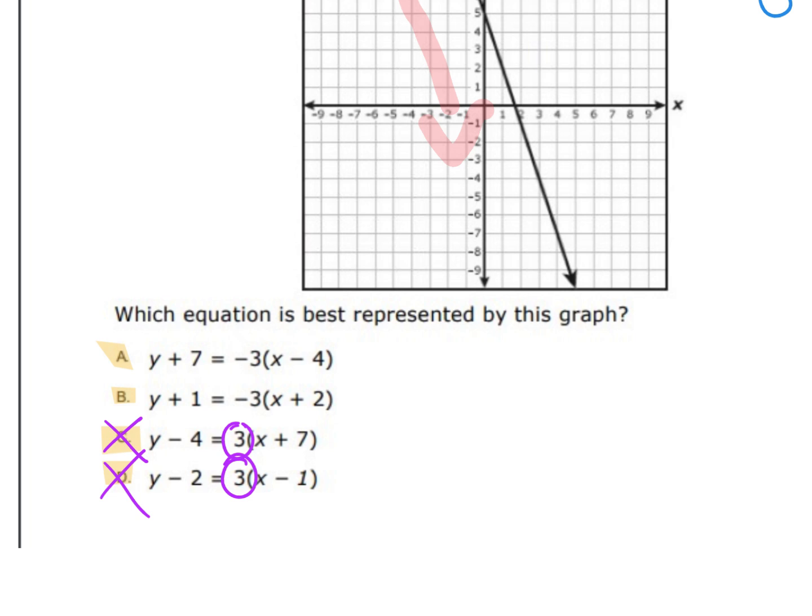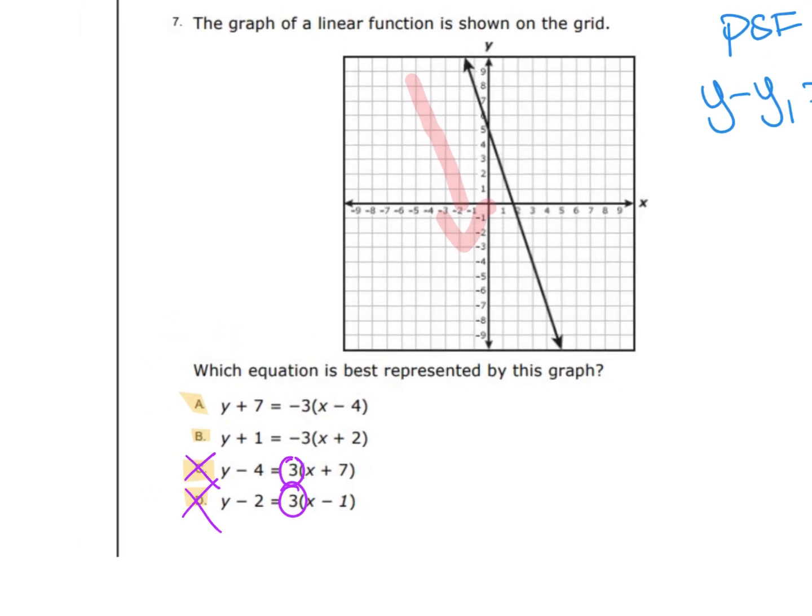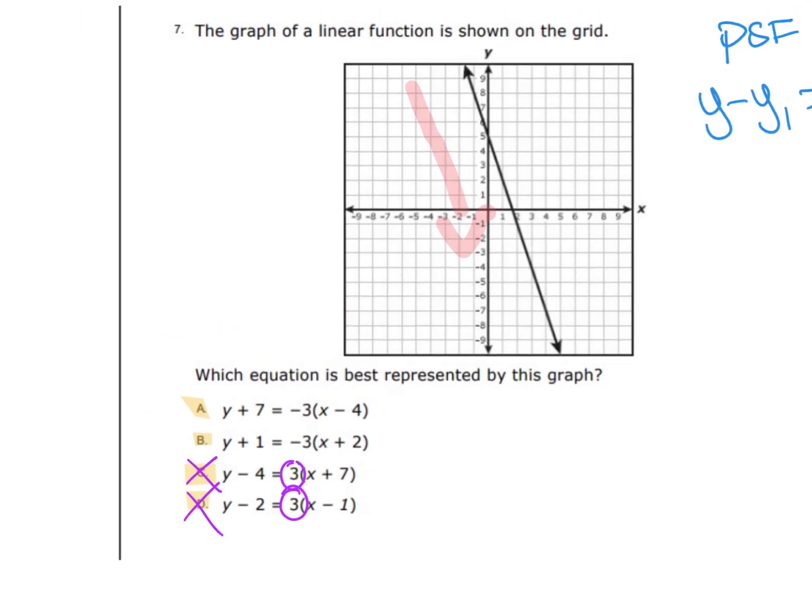Now what's left is we have to look at the points. So looking at answer A, I have a point here at 4 and a point at 7. And I'm going to pull these out. Remember, when I pull the point out of point slope form, it is going to be the opposite sign.